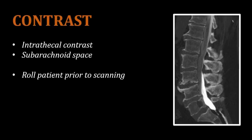However, we definitely will be using contrast. CT myelogram imaging uses only intrathecal contrast, which is injected into the subarachnoid space. It's also important that the patient is rolled 360 degrees prior to CT scanning. This is important to ensure that the contrast is evenly diffused throughout the subarachnoid space.